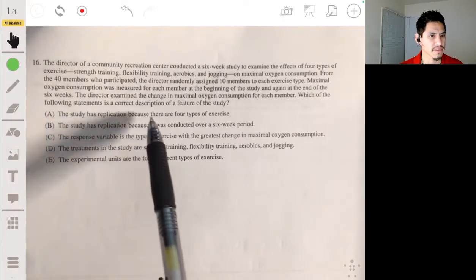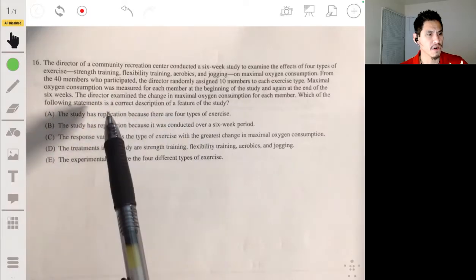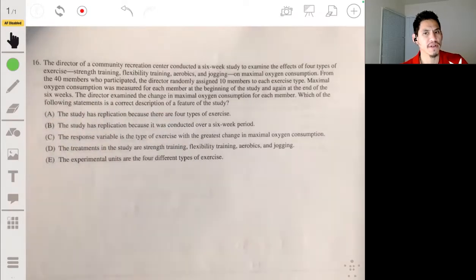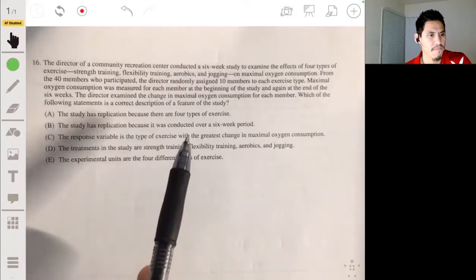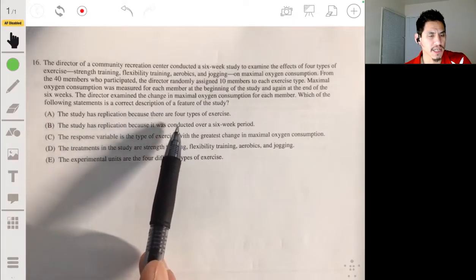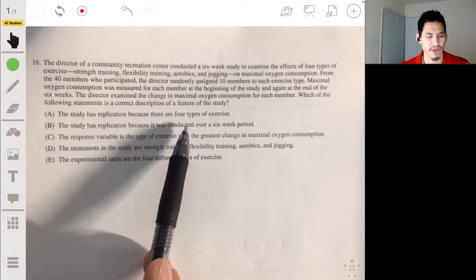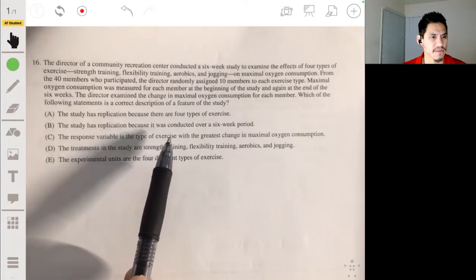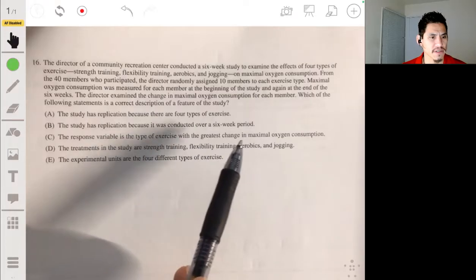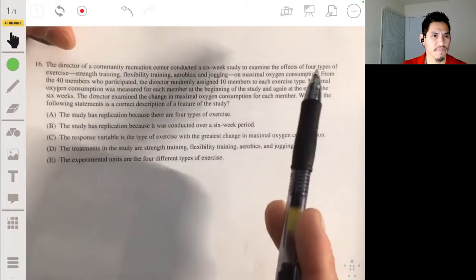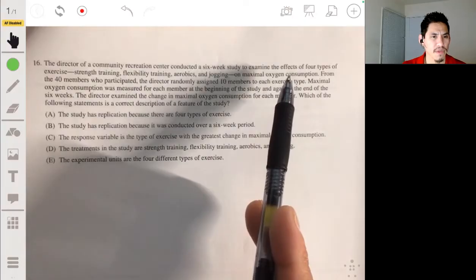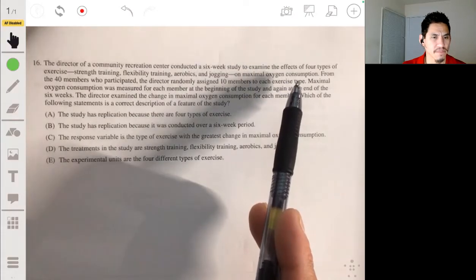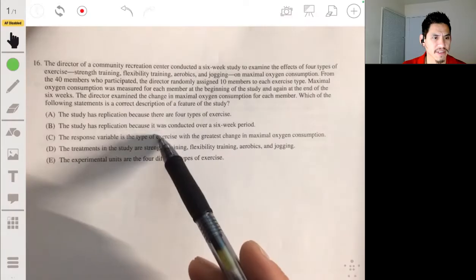The study has replication because there are four types of exercise. No, the replication occurs when you get big enough samples that were randomly selected. So it's not going to be that. So it won't be B either, because again, it has to do with the way you select samples and that they're large enough. The response variable is the type of exercise. No, the response variable is the maximal oxygen consumption. The treatments are a type of exercise.